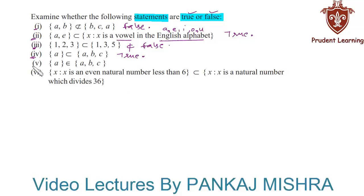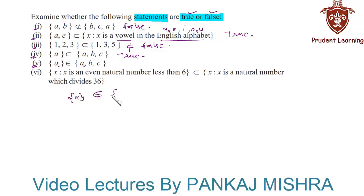In the fifth section, element a belongs to both sets, but the set containing element a is not an element of the second set. Therefore, the set containing a does not belong to the set containing elements a, b, and c. Hence the given statement is false.